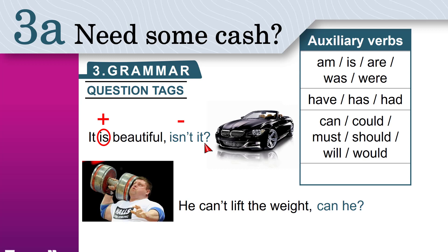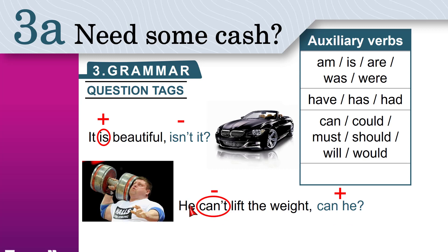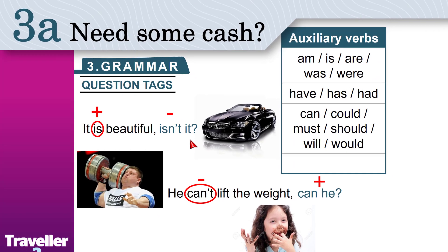If the auxiliary verb is negative, make the question tag affirmative. 'He can't lift the weight' — the auxiliary verb is 'can't', which is negative, so the question tag is affirmative: 'can he?' So: 'He can't lift the weight, can he?' and 'It is beautiful, isn't it?'